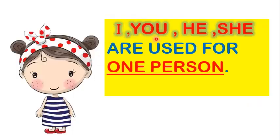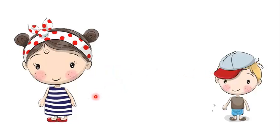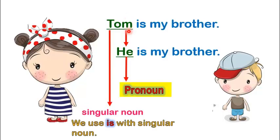I, you, he, she are used for what person? This is Tom. Tom is my brother. We can also say, he is my brother. Here, he refers to Tom. So, he is a pronoun that can be used for a male noun.